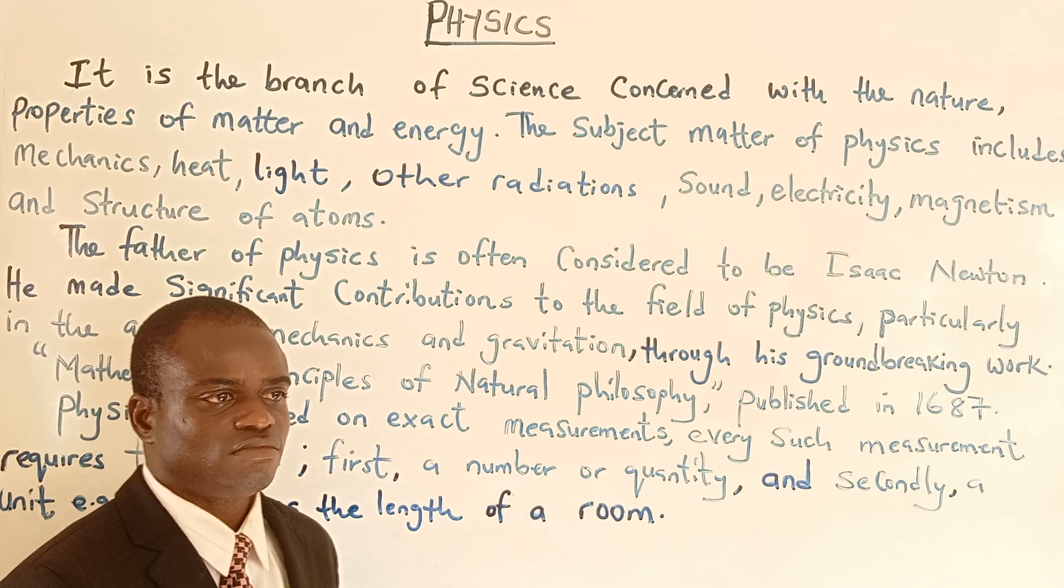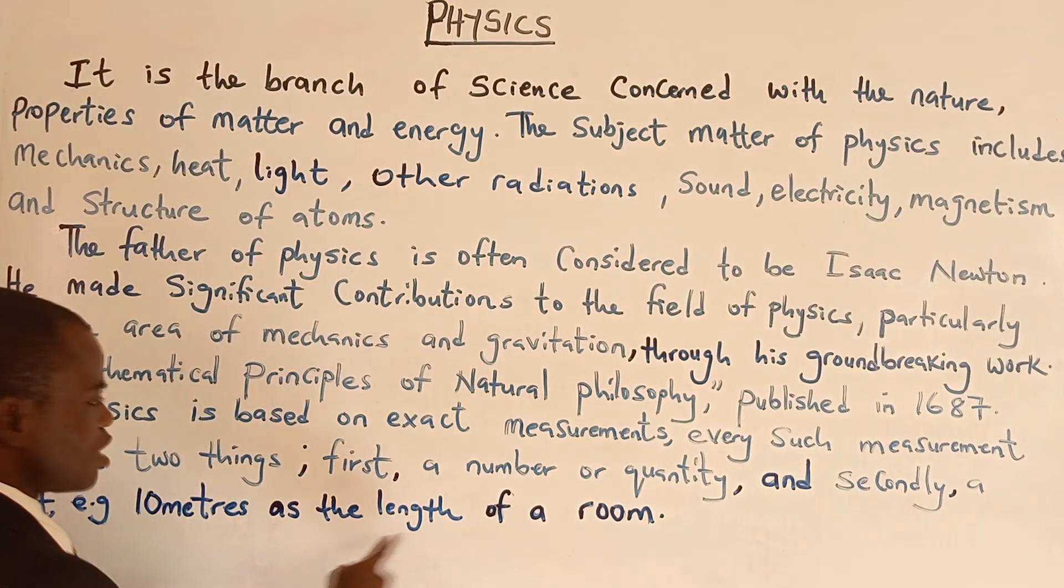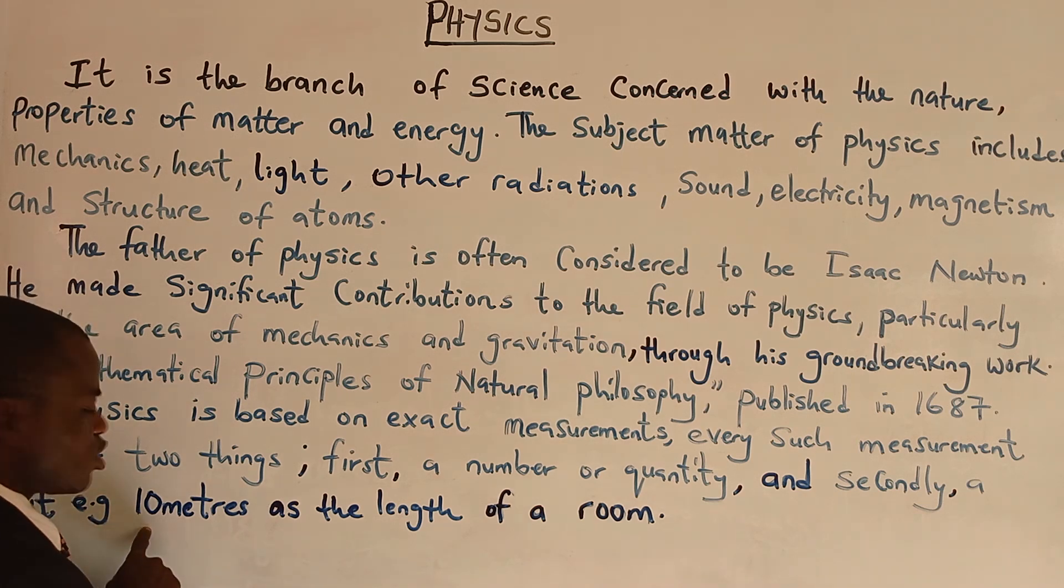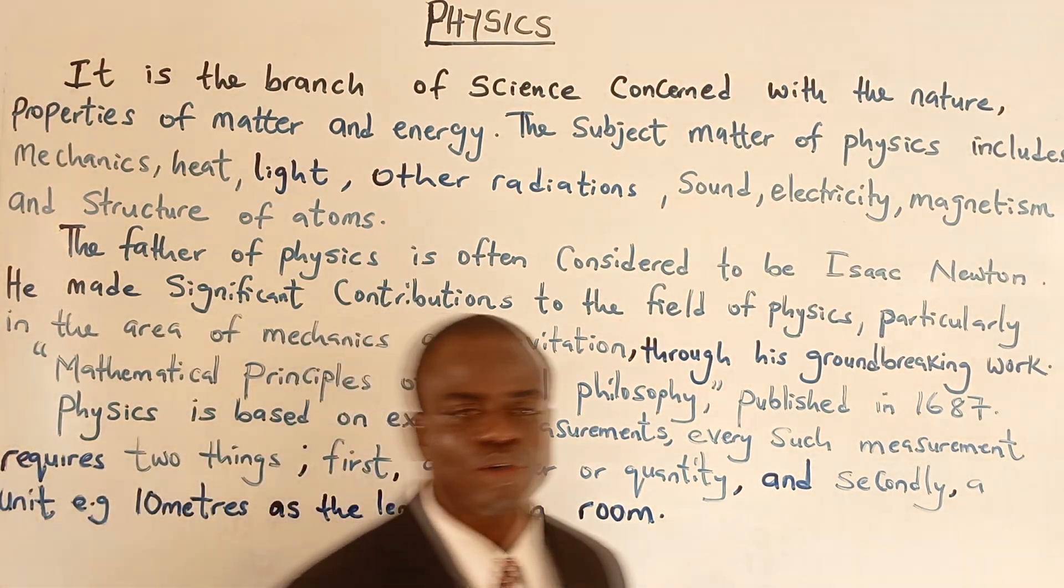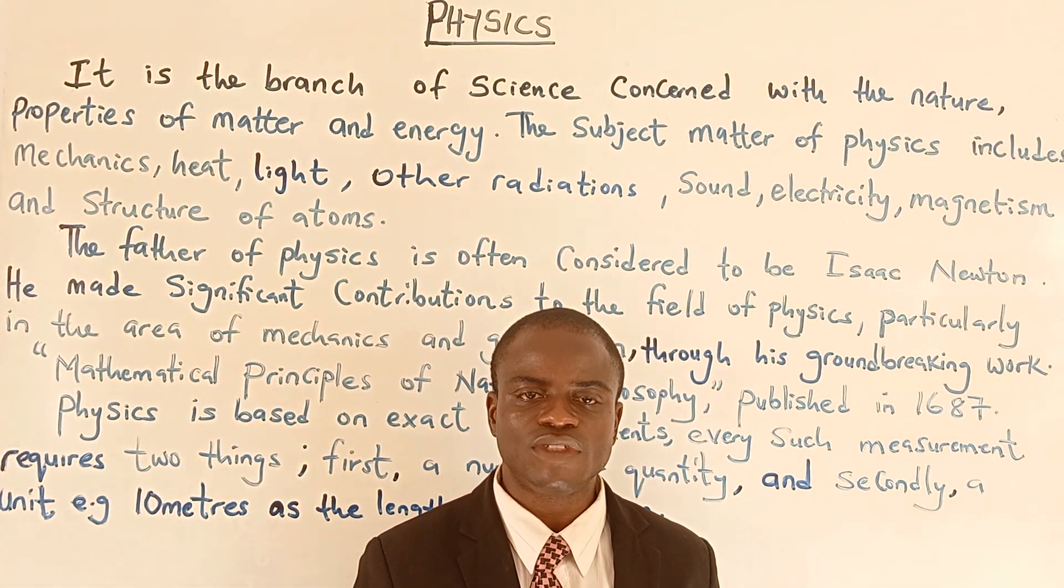For example, you can say 10 meters is the length of a room. You don't just mention 10, you have to put units, which is meters. Please take notes. Now, we are going to talk on fundamental and derived quantities.